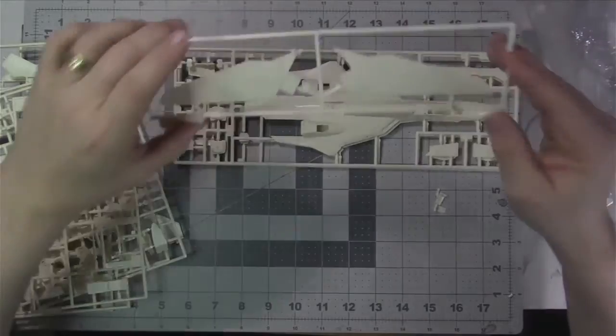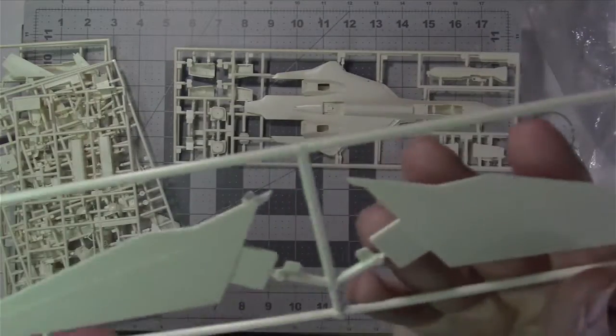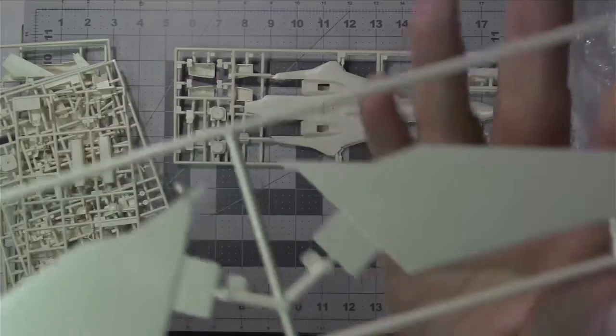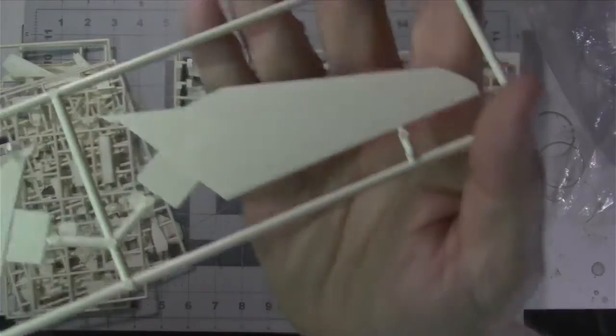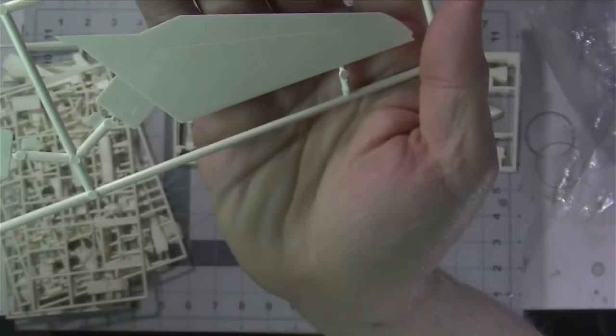And then we have the wing assembly. Nice little bit of recessed panel lines. Tough to see, I know, but you get the idea.